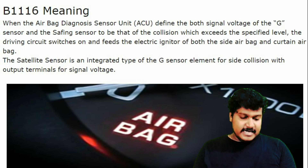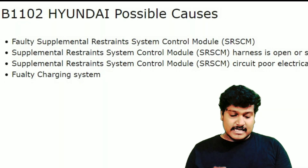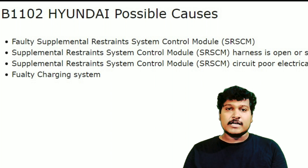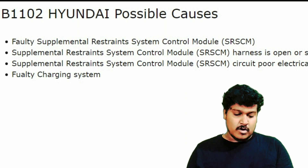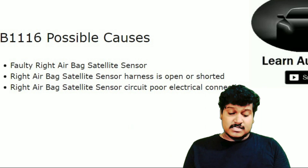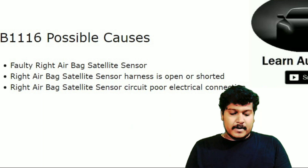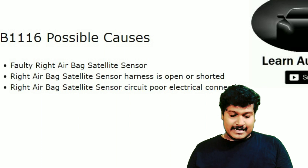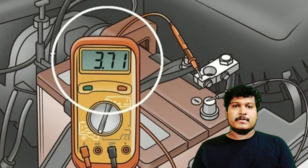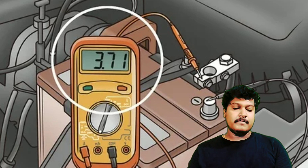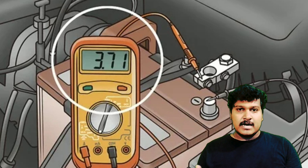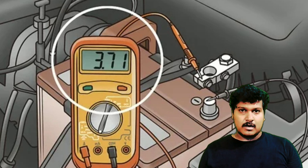Let's see the causes of these two B-code DTCs. For BW102, the main causes are: a faulty SRSCM, the SRSCM harness is open or short, poor electrical connection, or a faulty charging system. For B1116, the causes are: a faulty airbag control unit, the right airbag satellite sensor harness is open or short, poor electrical connection. As I know the exact reason in my case — I had turned on the AC for a long time, the battery got drained, and that is why I am getting B1116 and BW102. The ultimate reason is the power supply is not up to the mark.